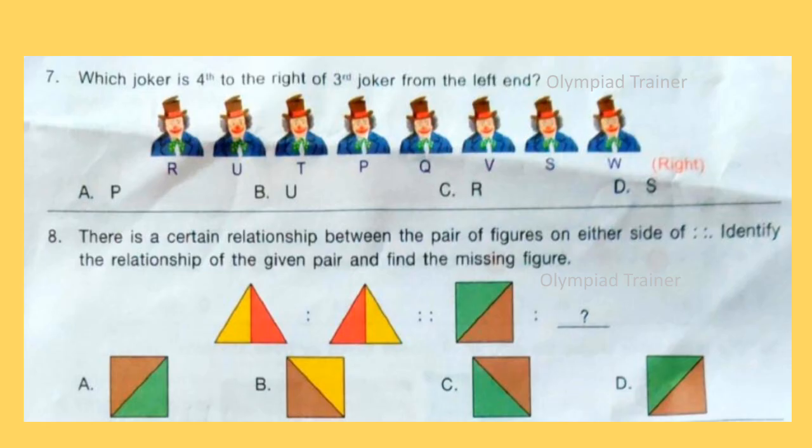Question 7: Which joker is 4th to the right of 3rd joker from the left end? Now 3rd joker from the left end is joker T and 4th to the right of T is S. So Option D, S is the answer.